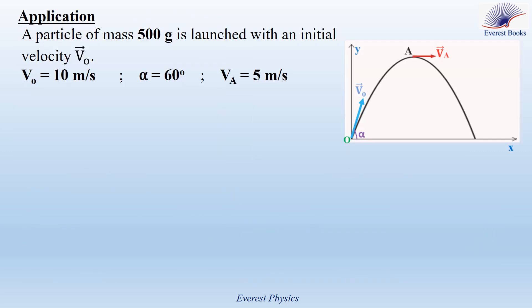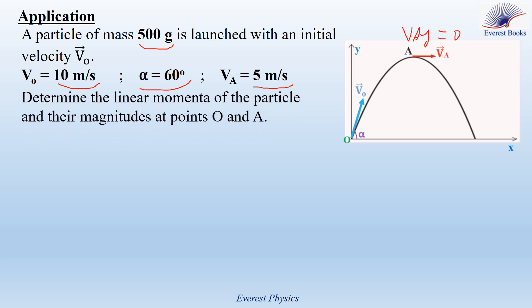Now let's solve an example on the linear momentum of a particle. A particle of mass 500 grams is launched with an initial velocity V₀. The magnitude of V₀ is 10 meters per second, and it makes an angle alpha equal to 60 degrees with the horizontal. At the highest point A, the velocity of the particle is V_A, which is parallel to the horizontal axis and has a magnitude of 5 meters per second. Determine the linear momentum of the particle and their magnitudes at points O and A.